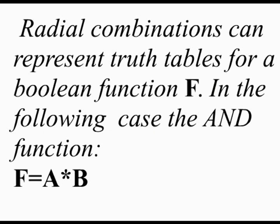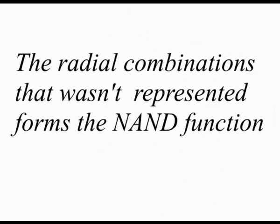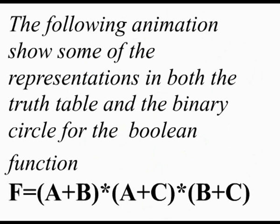Properties of the binary circle: radial combinations can represent truth tables for the boolean function f — in the following case, the AND function. The arrow points to the result f in the center. The radial combinations that weren't represented form the NAND function. The following animation shows some of the representations in both the truth table and the binary circle for the boolean function.